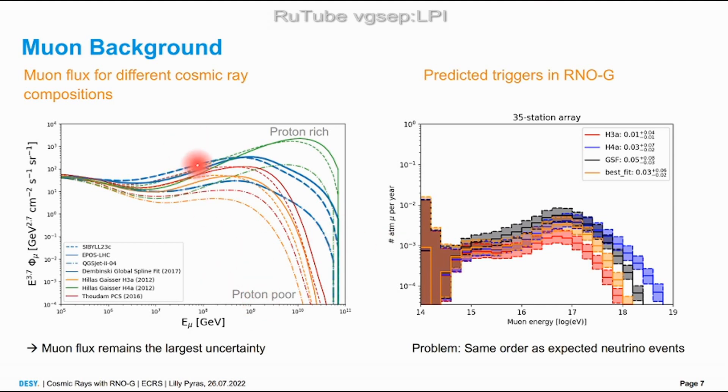If we follow that together with what our energy might be able to trigger, then we see that we get maybe one muon in five years in the full array. This sounds pretty small but the problem is that's the same order of magnitude we expect neutrinos to occur. If we have a neutrino event we really want to make sure it's not a muon.